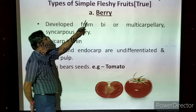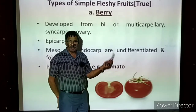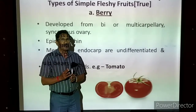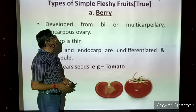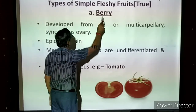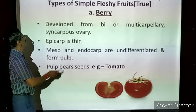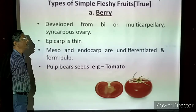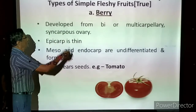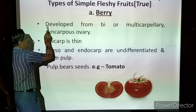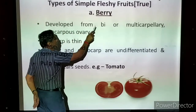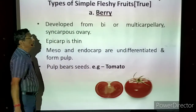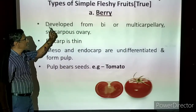Now we are coming to fleshy fruits. As mentioned, the pericarp is thick and fleshy, differentiated into epicarp, mesocarp, and endocarp. Within this group, there are different types. The first type is called berry — B-E-R-R-Y. The berry is developed from a bicarpellary or multicarpellary syncarpous ovary. The ovary has two or more carpels — the number can be 2, 3, 4, 5, 6, 7, or 8, any number.